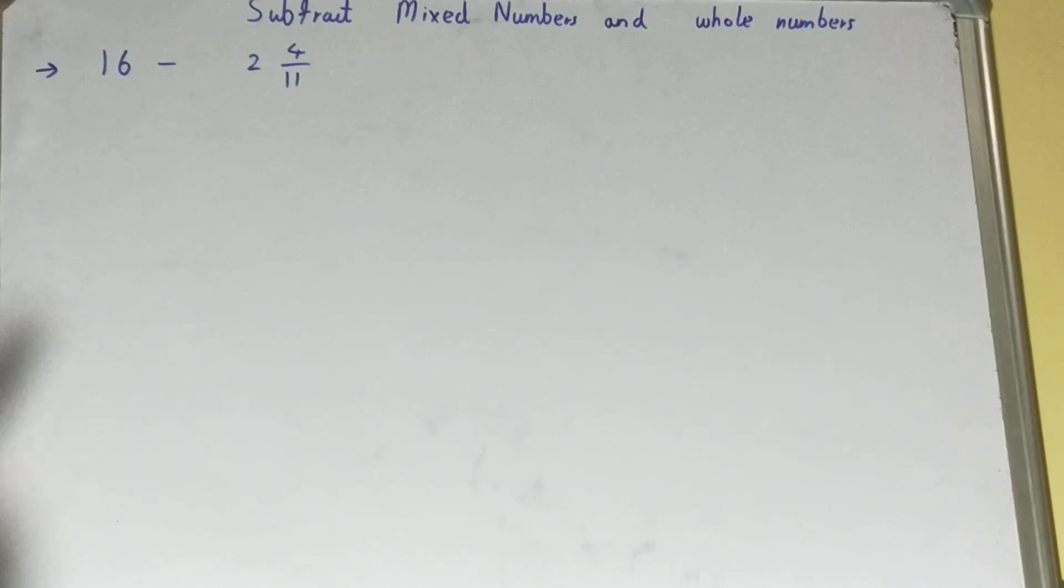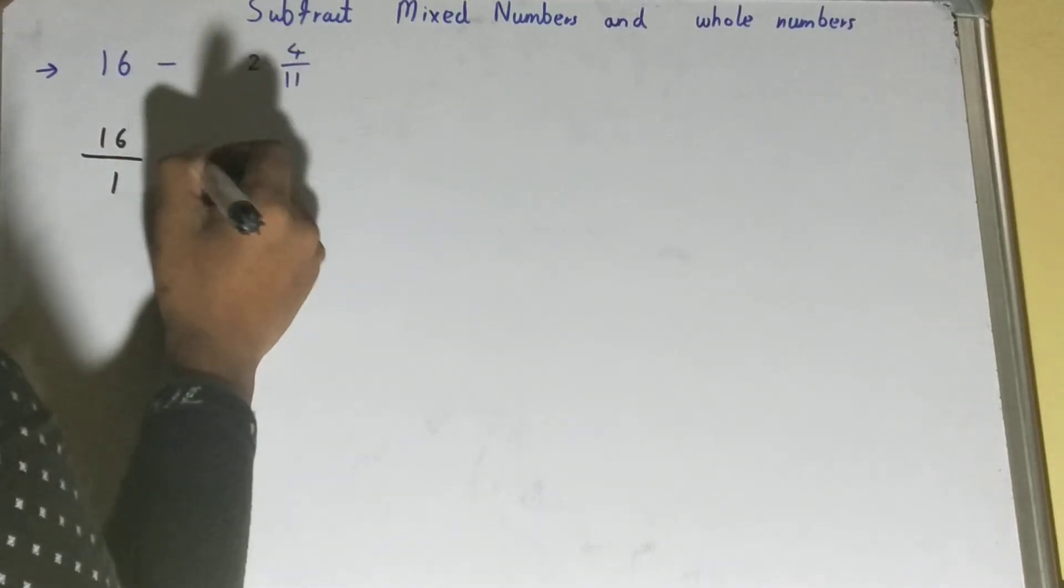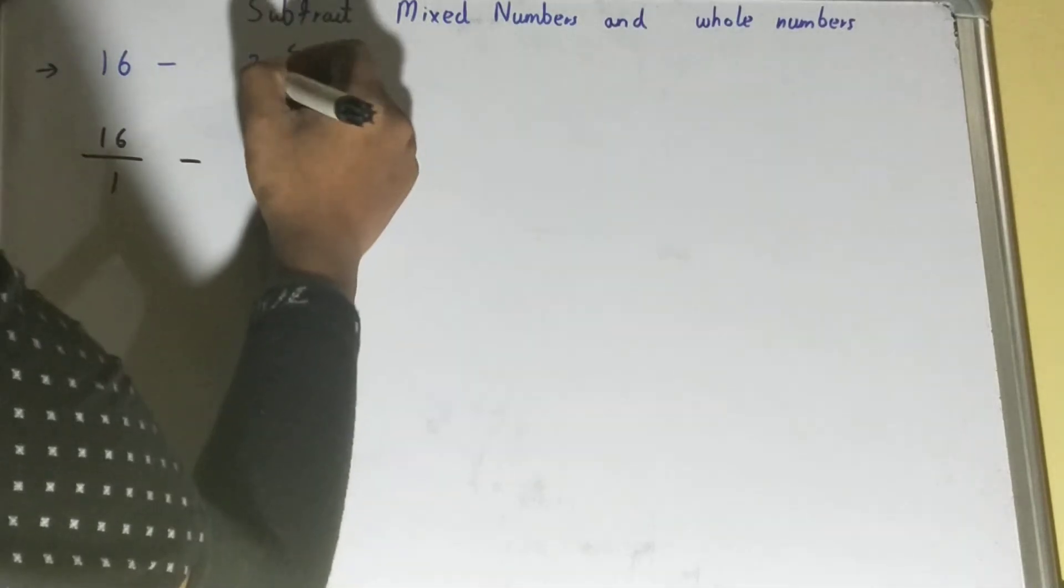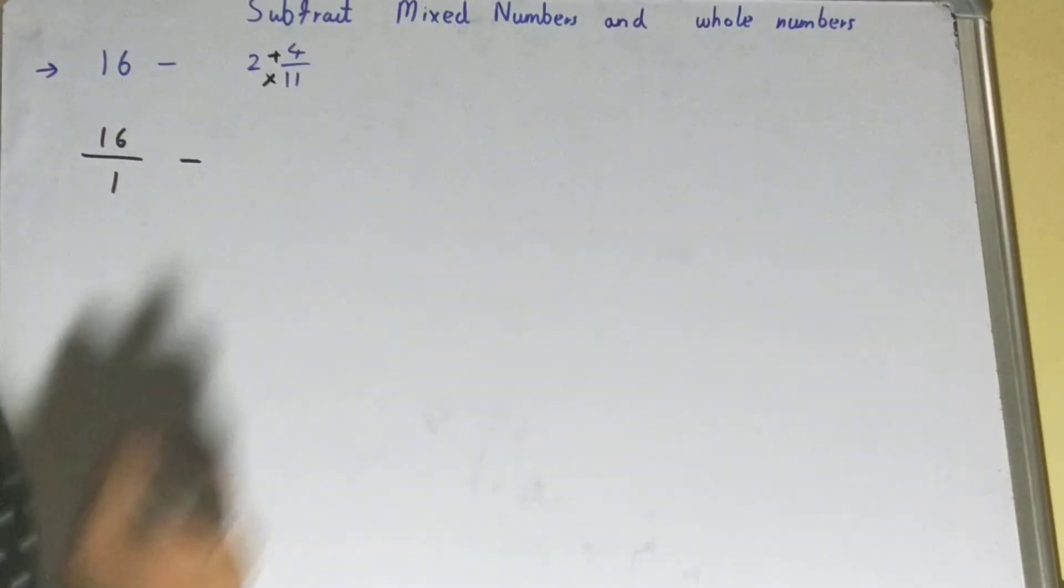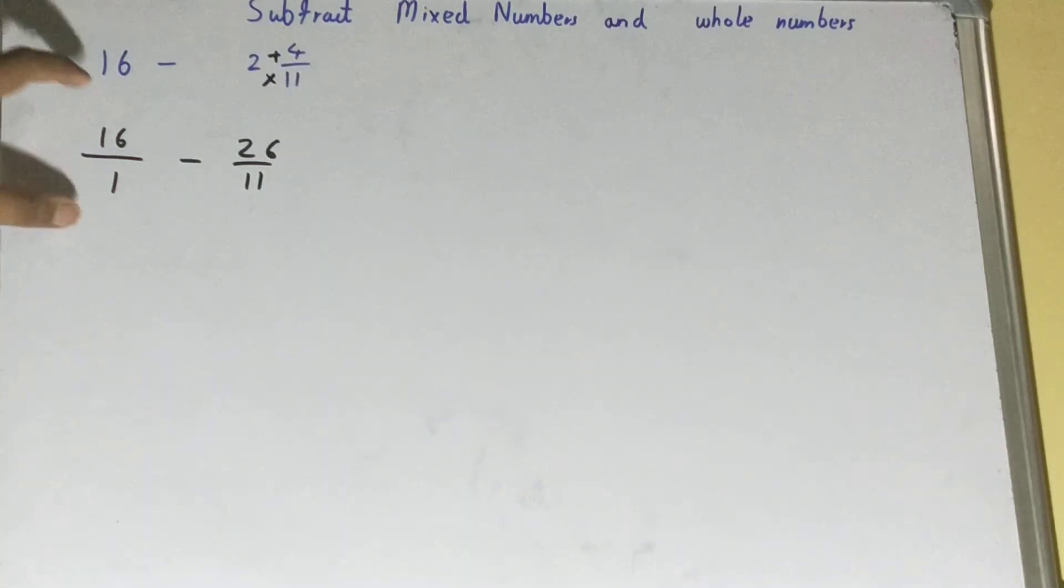I will say convert them into fractions. So it will be 16 upon 1, and this also convert into fraction. You can convert it: 22 plus 4 is 26 upon 11. Once you have them in a fraction form, what you can do is you can take the LCM.